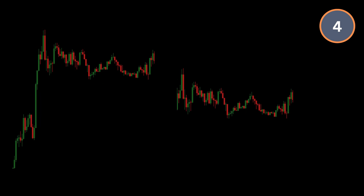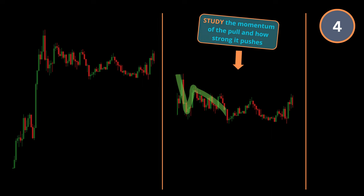Then number four, on that smaller trend that is building up within the pullback, observe its momentum by checking how strong it pushes. What you want to focus on is when the pullback gets to the neck or 100% pullback. Then when that happens, it signals that the trend wants to resume again which means that you should start your preparations for placing a trade.